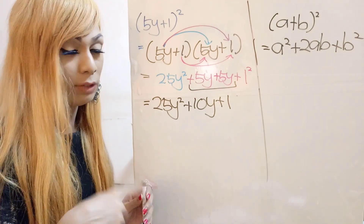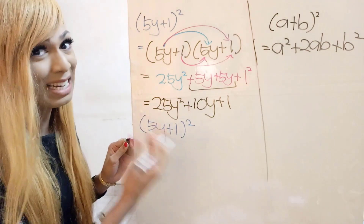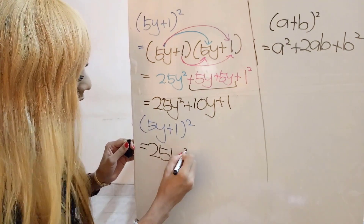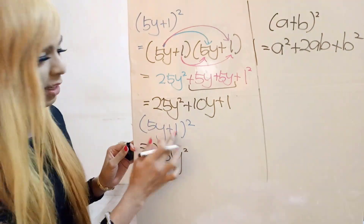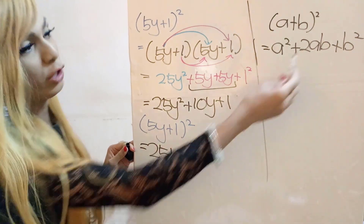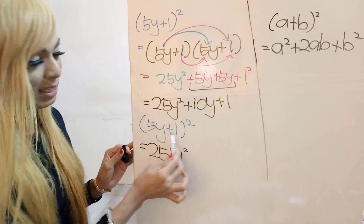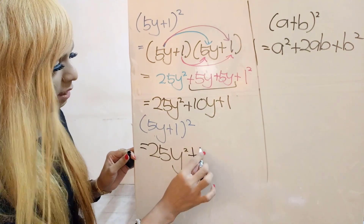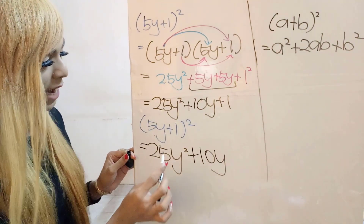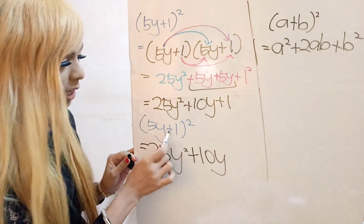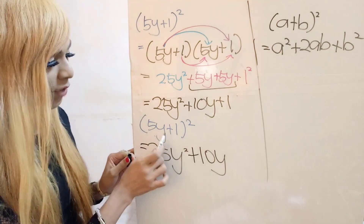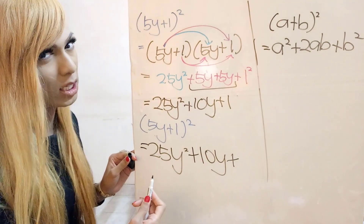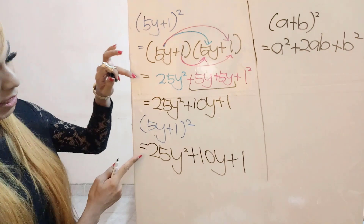Now using the binomial formula: (5y) squared is 25y squared. Then 2 times 5y times 1 — 2 times 5 is 10, times 1 is 10 — so plus 10y. A quick tip: if the sign between terms is positive, the middle term is positive; if negative, it's negative. The last term is always positive. Then 1 squared is just 1. So we get 25y squared plus 10y plus 1 in one line.